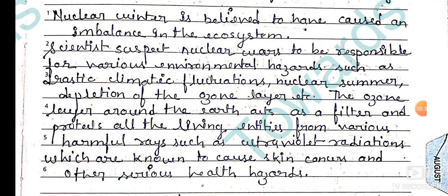Nuclear winter tab hota hai jab nuclear war hota hai, jis se bohot zyada radiation hota hai, cheezein jal jaati hain, aur usse jo soot aur jo dust hota hai woh atmosphere mein years tak rehte hain aur nuclear winter cause karte hain. Yeh jo ecosystem hai, environment hai, atmosphere hai, usmein imbalance cause karte hain.